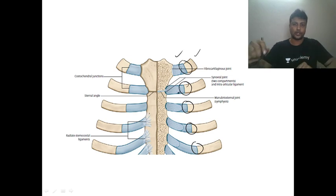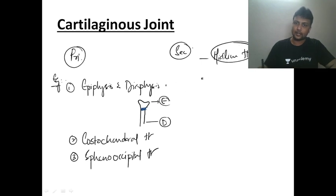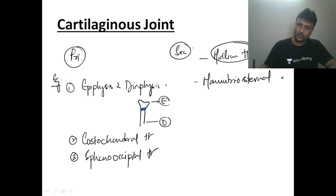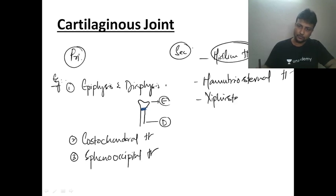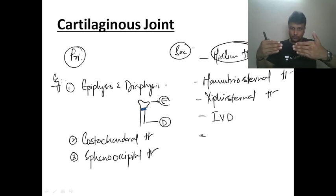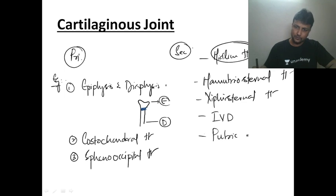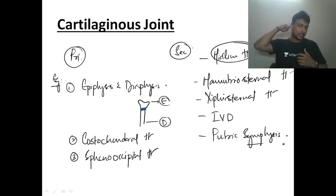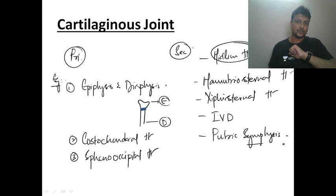Examples of secondary cartilaginous joint: number one, the manubriosternal joint between the manubrium sternum and the body of the sternum; number two, the xiphisternal joint between the body of the sternum and the xiphoid process; number three, the intervertebral disc between vertebrae; and number four, the pubic symphysis between the two pubic bones. All these are midline joints.